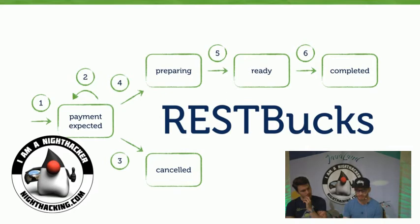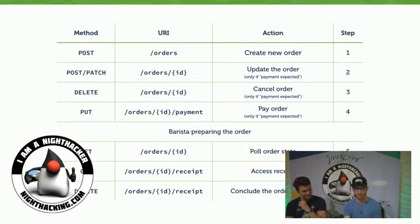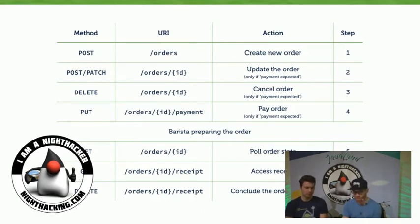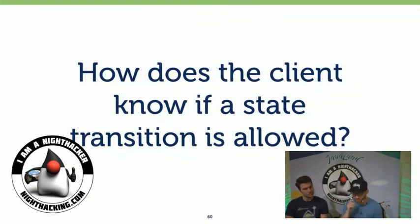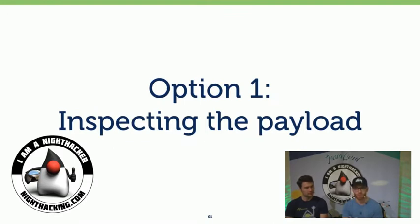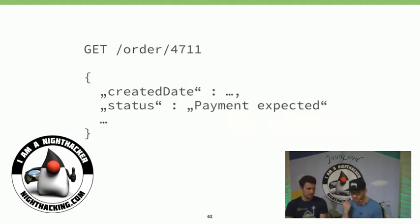The question is how do you model this as a REST web service? If you use the usual tools, you get some kind of documentation or specification that's very URI-centric and neglects the fact that you have these state constraints. How does the client actually know when it's allowed to cancel an order? The first option — which most developers use — is inspecting the payload. You get some JSON and you document that cancellation is only possible if the order status is 'payment expected.'